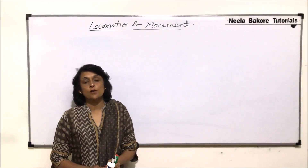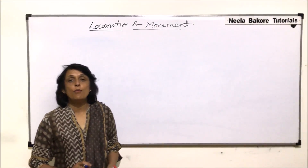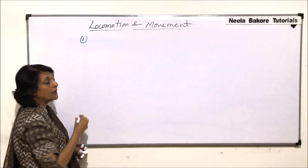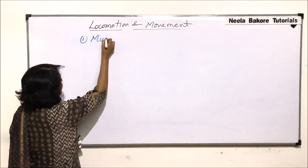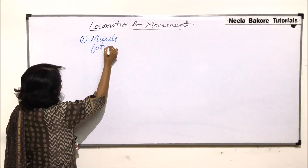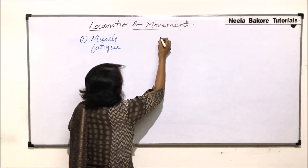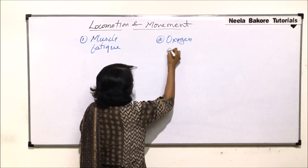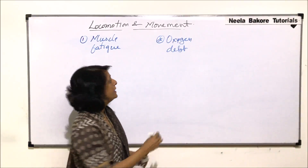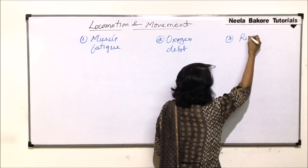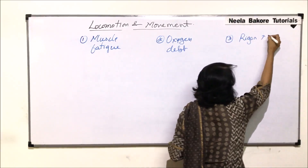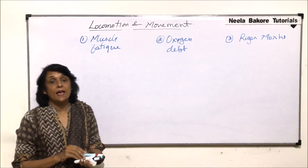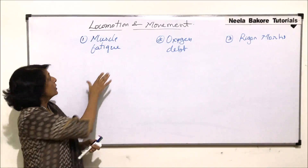In this video we will talk about three important terms related to muscle and muscle contraction. The first one is muscle fatigue, the next is oxygen debt, and the third is rigor mortis. All these are related to muscles.